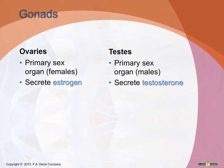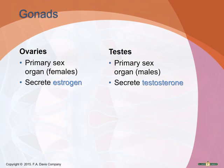Briefly, the gonads — the ovaries in females and the testes in males — are the primary sex organs. The ovaries secrete estrogen and the testes secrete testosterone; we'll cover those cycles in more detail with the reproductive system. That covers the endocrine system. Additional resources on calcium regulation and glucose regulation will be posted on Schoology, and don't forget the medical terminology you'll need to know.